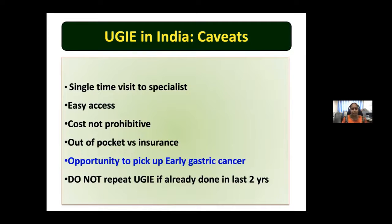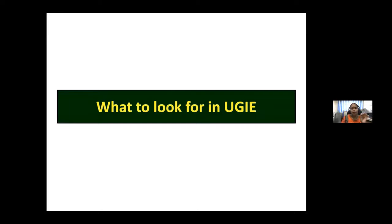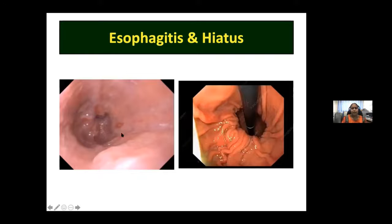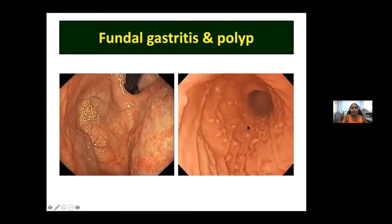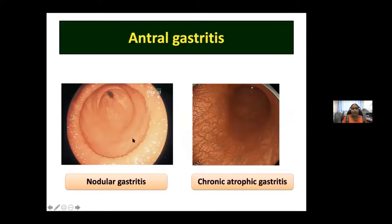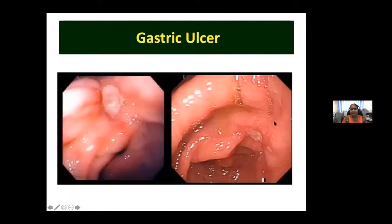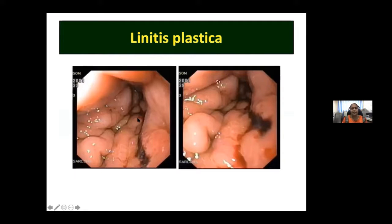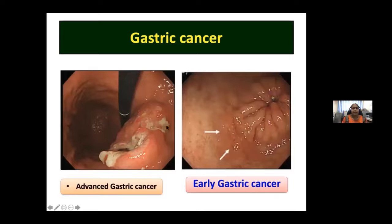Also look for gastric ulcers, linitis plastica — especially in patients with marked early satiety and decreased gastric volume available for distension — and aim to pick up early gastric cancer. This is the most important message: our aim for endoscopy in dyspepsia should be to detect early gastric cancer. Use NBI to pick up H. pylori gastritis and early gastric cancer patterns. Most endoscopes now have NBI capability.